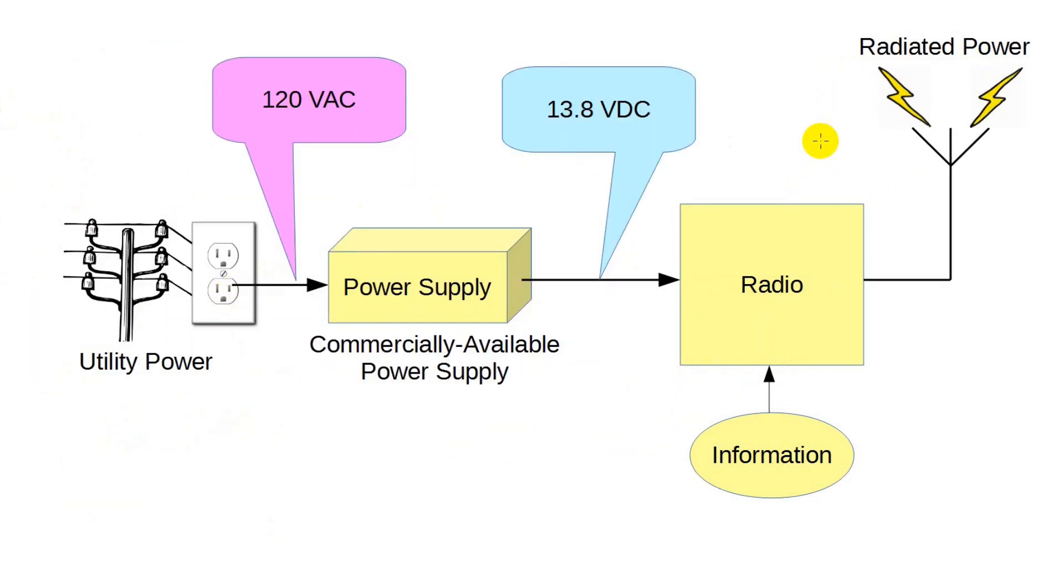Let's touch on two common scenarios. In this one, a very common scenario for home stations, a commercial power supply converts the 120 volts AC, or 240 volts AC in many other countries, into 13.8 volts DC for the radio. There are many such power supplies available. Usually, for a 50-watt VHF mobile radio, we're looking at a 10-amp supply. And for a 100-watt HF radio, we're looking at a 20-amp supply.